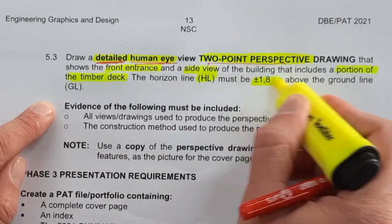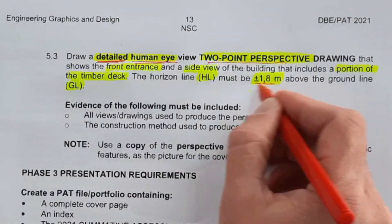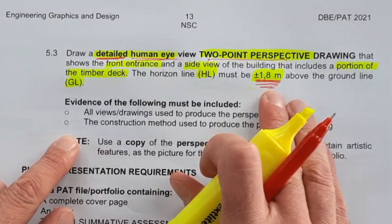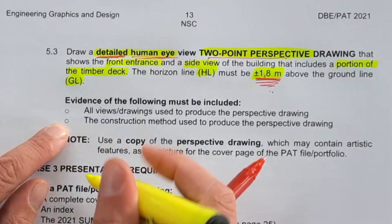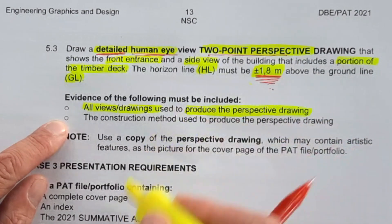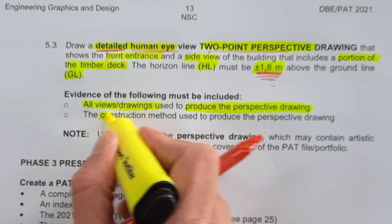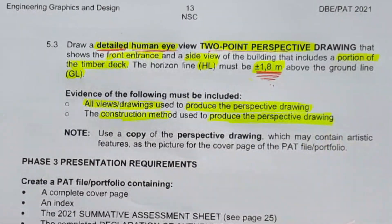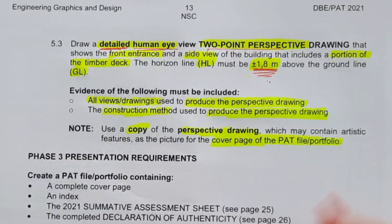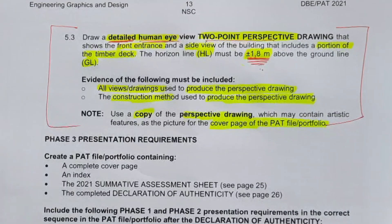The horizon line (HL) is specified to be at 1.8 meters above the ground line. I'm going to show you how to hack this — it's actually a great requirement and it's going to make your view look absolutely amazing. You must include all the views or drawings used to produce this perspective drawing — that's going to be the top view and the side views. Note that a copy of this drawing will go onto the cover page of your PAT portfolio.